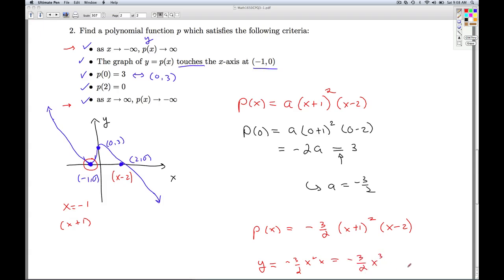y equals x cubed would look like this. So y equals negative 3 halves x cubed would look like that. And sure enough, the end behavior then matches what it should. So here's our final answer for a polynomial that satisfies those conditions. And that'll do it for checkpoint quiz 3.1.